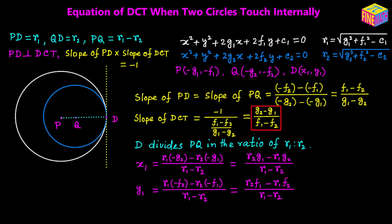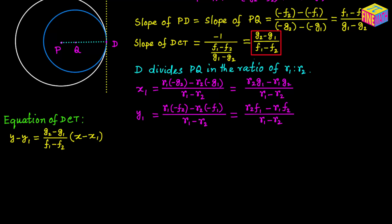Now we know the coordinates of a point on the common tangent — that point is D — and we also know the slope of the common tangent. Using the point-slope form of the equation of a straight line, we can write down the equation of the common tangent: Y minus Y sub 1 equals the slope G sub 2 minus G sub 1 over F sub 1 minus F sub 2, times X minus X sub 1. Also from a previous video, the equation of the common tangent is S sub 1 minus S sub 2 equals 0.